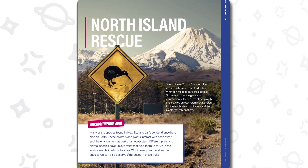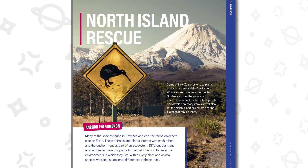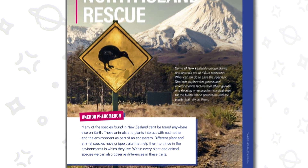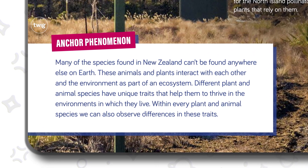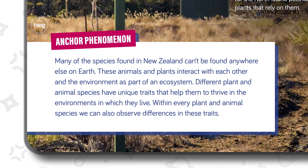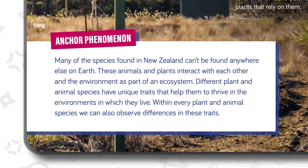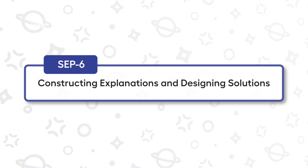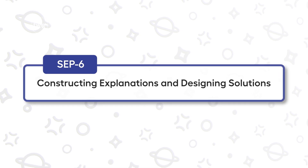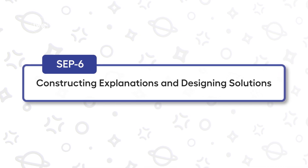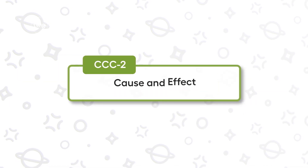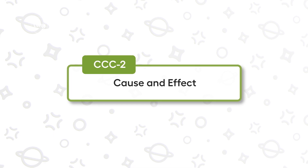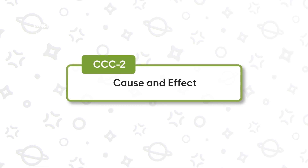Each science module has an anchor phenomenon for students to experience, describe, investigate, and ultimately explain — applying key science and engineering practices, including SEP-6, constructing explanations and designing solutions, and cross-cutting concepts like CCC-2, cause and effect, to make sense of the phenomenon.